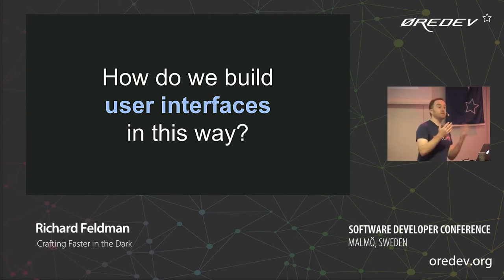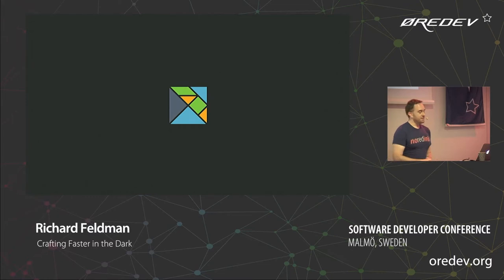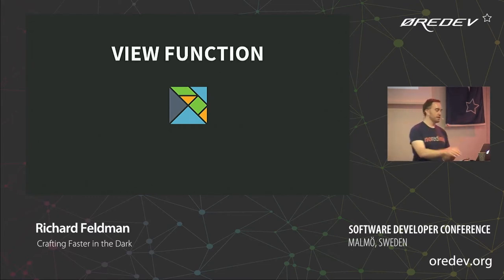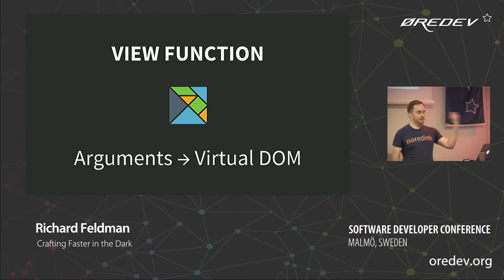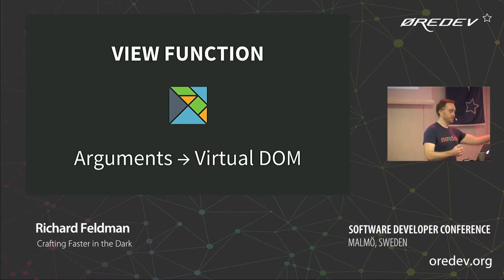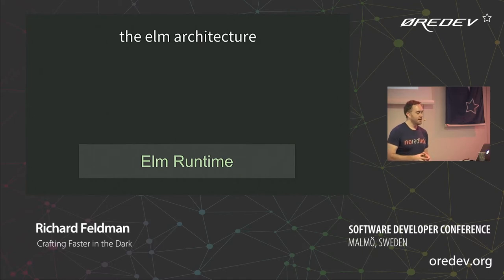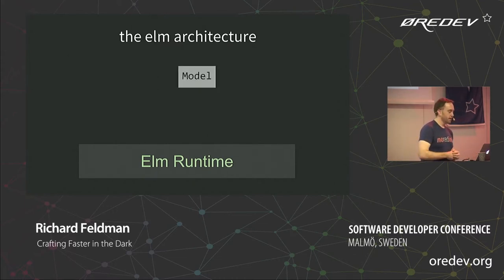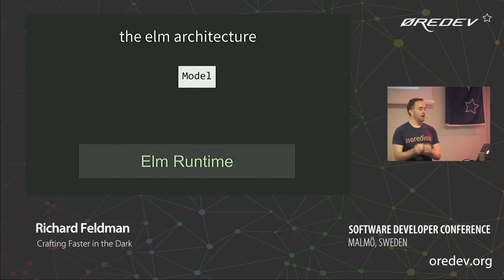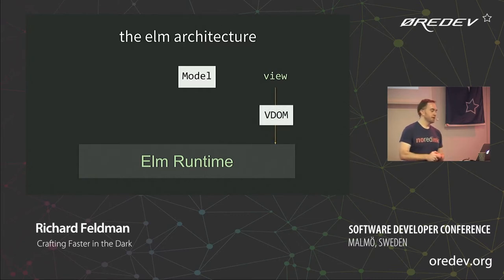You might wonder: how do you possibly build user interfaces that way? No side effects — how do you do stuff without side effects? No mutation — how do you change state without mutation? The answer is this thing called the Elm architecture. The Elm architecture basically begins with a view function. You give it some arguments and it returns some virtual DOM — a description of how you want the DOM, which is to say the web page, to look. The Elm architecture takes all these ingredients — three ingredients — and sends them to the Elm runtime, which the Elm compiler spits out and uses to process everything and make your application work.